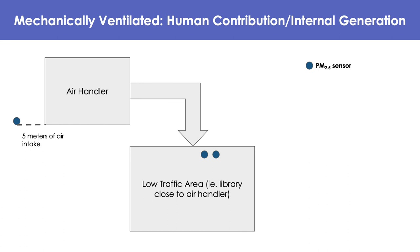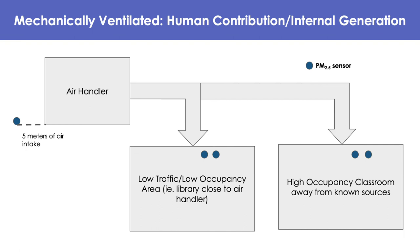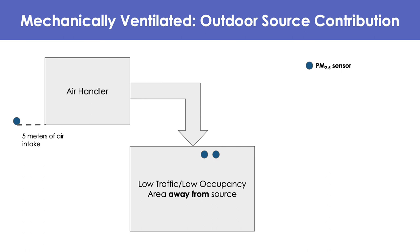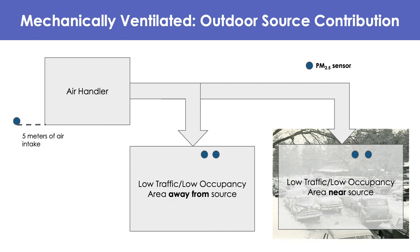For determining PM from human contribution or internal generation, use the same air handler effectiveness setup to establish a baseline PM 2.5 reading. Then measure a high-occupancy room to examine the difference in concentration between low and high occupancy. Both rooms should be away from known ambient sources so PM can be attributed to occupants or internal generation. Two monitors are placed in each room as best practice. To investigate outdoor source contribution — like from gasoline-powered vehicles — compare the baseline to a classroom near the ambient source with low foot traffic to show how much PM infiltrates through the building envelope.